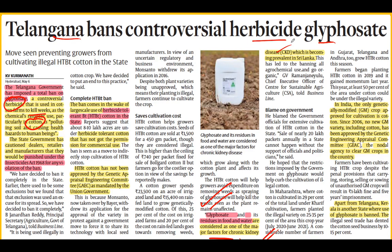In the PDF, pink color is used for highlighting keywords and yellow is for content. Those who download the PDF from the description can easily keep track of it using different colors. The state government has clearly banned glyphosate. Users, retailers, manufacturers — all have been told that if you use it, you will be punished under the Insecticide Act of 1968.